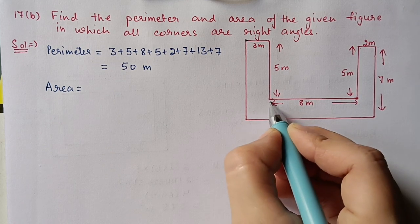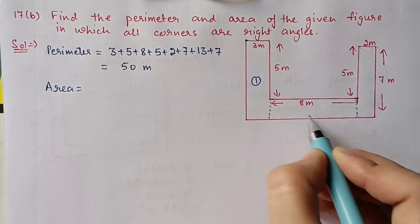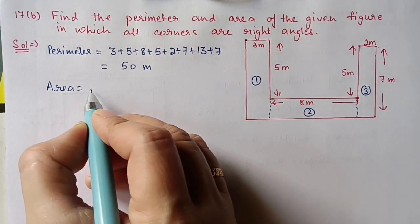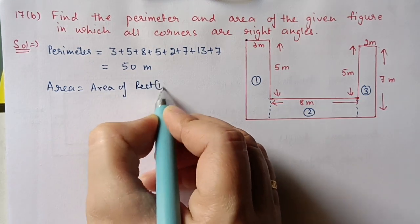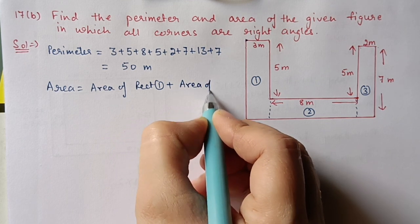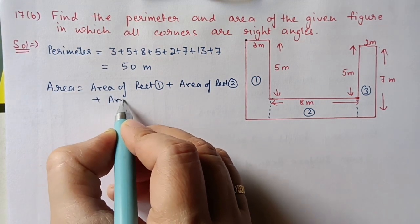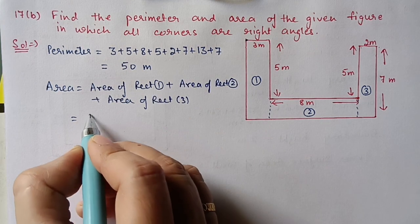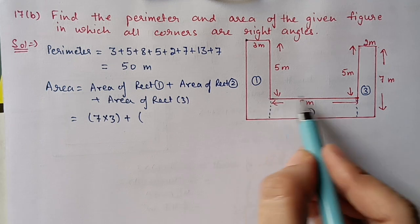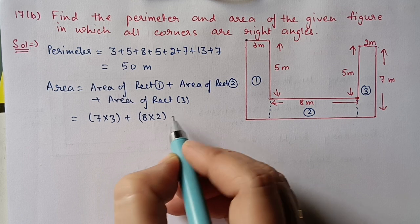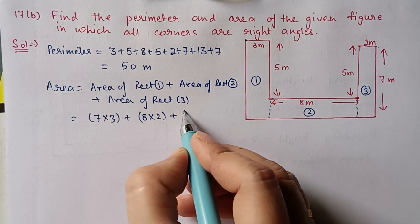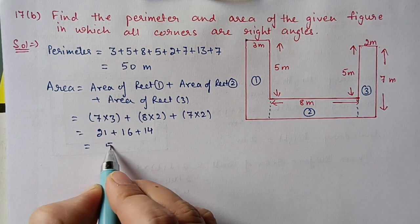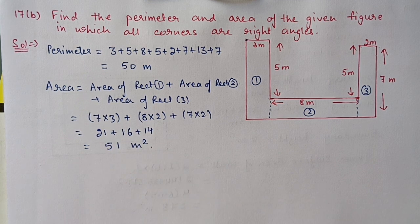For area we will divide this figure into small rectangles. We have three rectangles — first, second, and third. Total area is the sum of the areas of these three rectangles. Area of first rectangle: length 7, breadth 3, so 7 × 3 = 21. Area of second rectangle: length 8, breadth 2, so 8 × 2 = 16. Area of third rectangle: 7 × 2 = 14. After adding: 21 + 16 + 14 = 51 square meters.